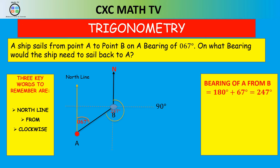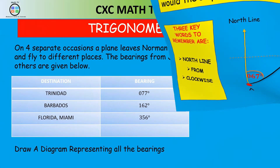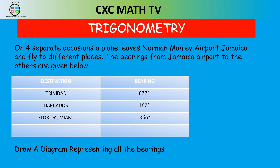And so the bearing of A from B would be 180 degrees plus 67, which is 247 degrees. Now let's look at another question. On four separate occasions a plane leaves Norman Manley airport, Jamaica, and flies to different places. The bearings from Jamaica airport to the others are given: the bearing to Trinidad is 77 degrees, the bearing to Barbados is 162, and the bearing to Florida is 356 degrees.